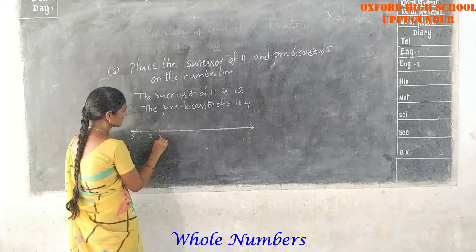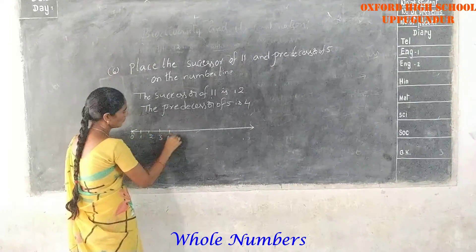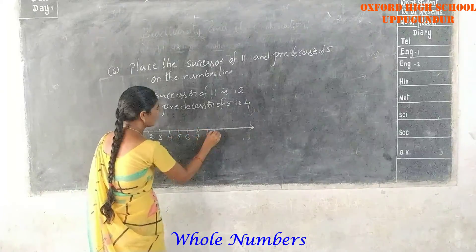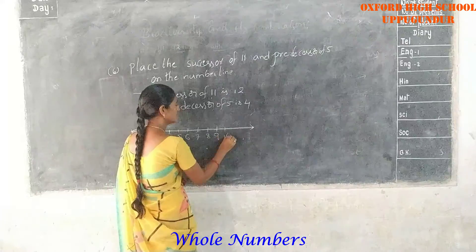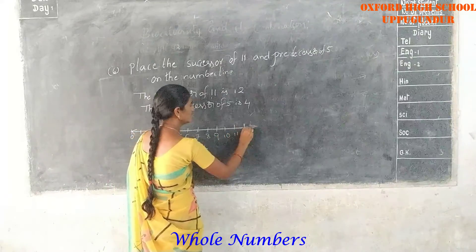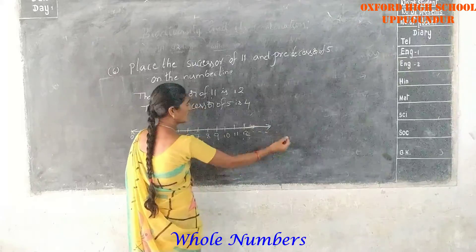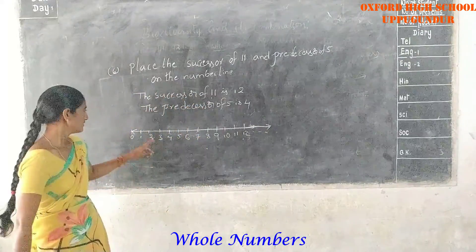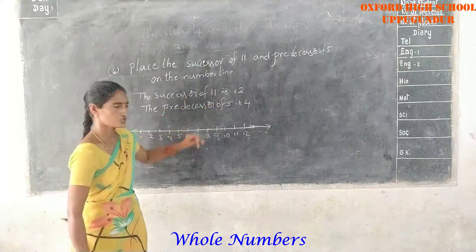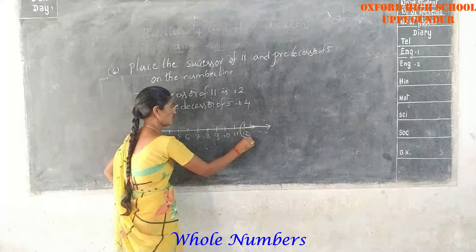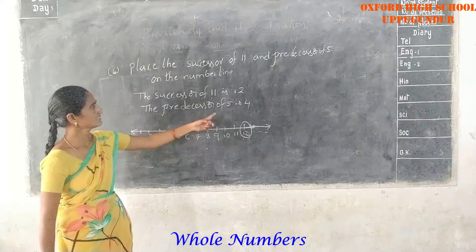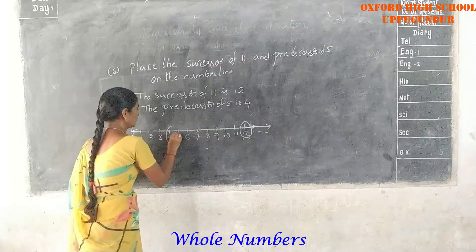Draw the number line: 1, 2, 3, 4, 5, 6, 7, 8, 9, 10, 11, 12, and so on. The successor of 11 is 12, and the predecessor of 5 is 4. Mark both on the number line.